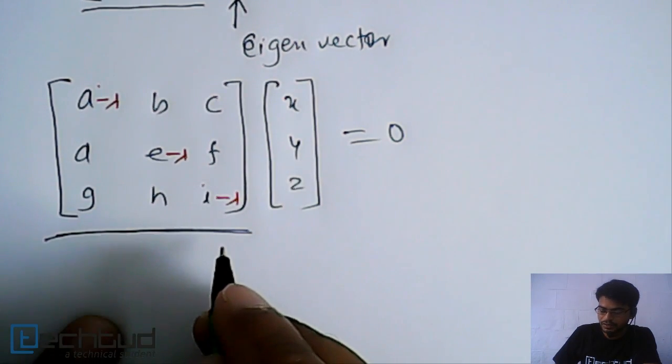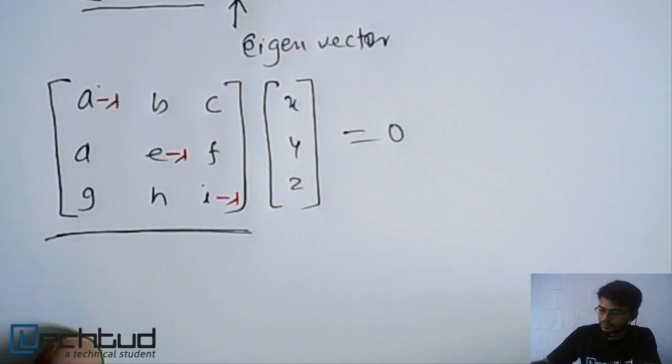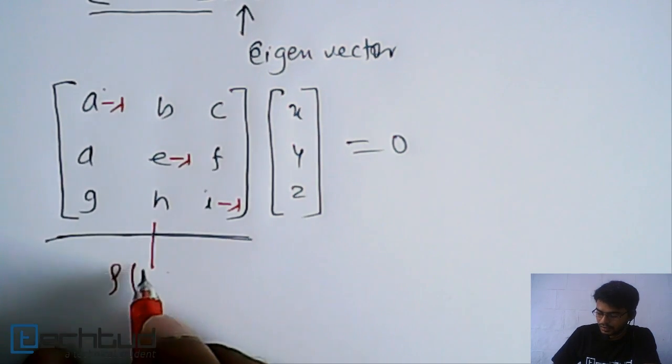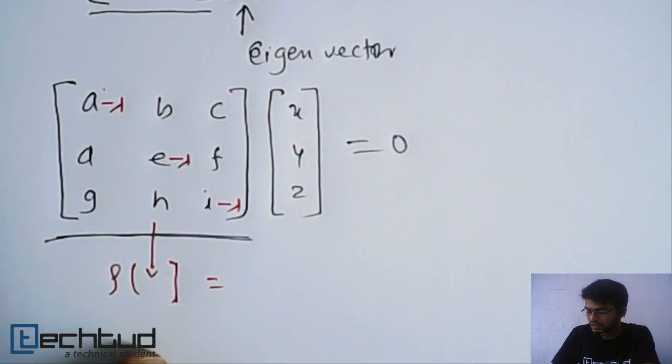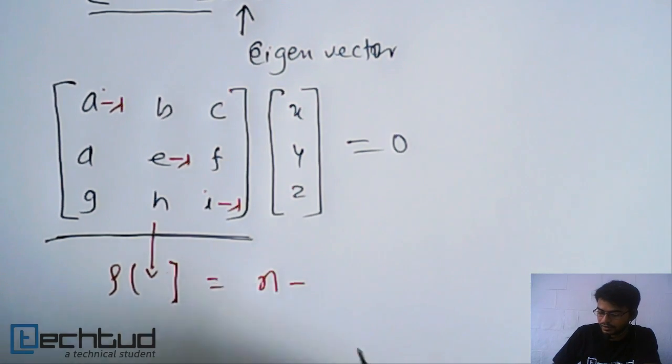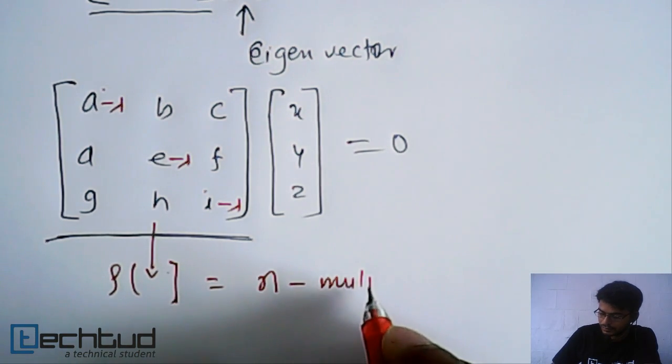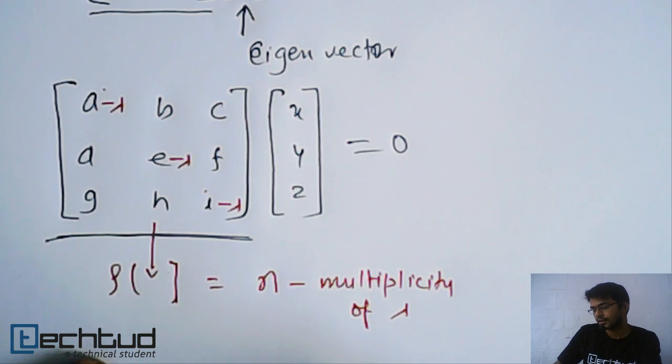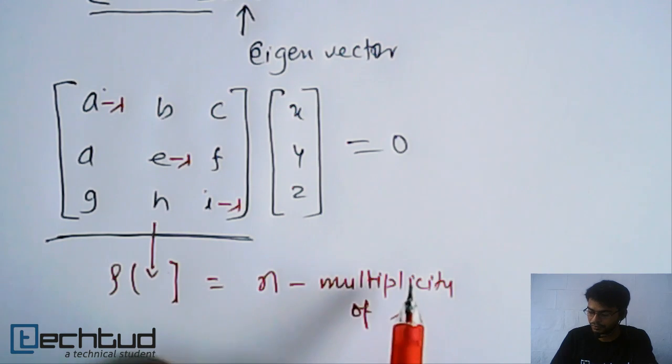This is the coefficient matrix in this case. If we go about finding the rank of this matrix, what will be the value? The value will be n if it is an n by n matrix, so the rank will be n minus multiplicity of lambda, meaning n minus the number of unique values of lambda.